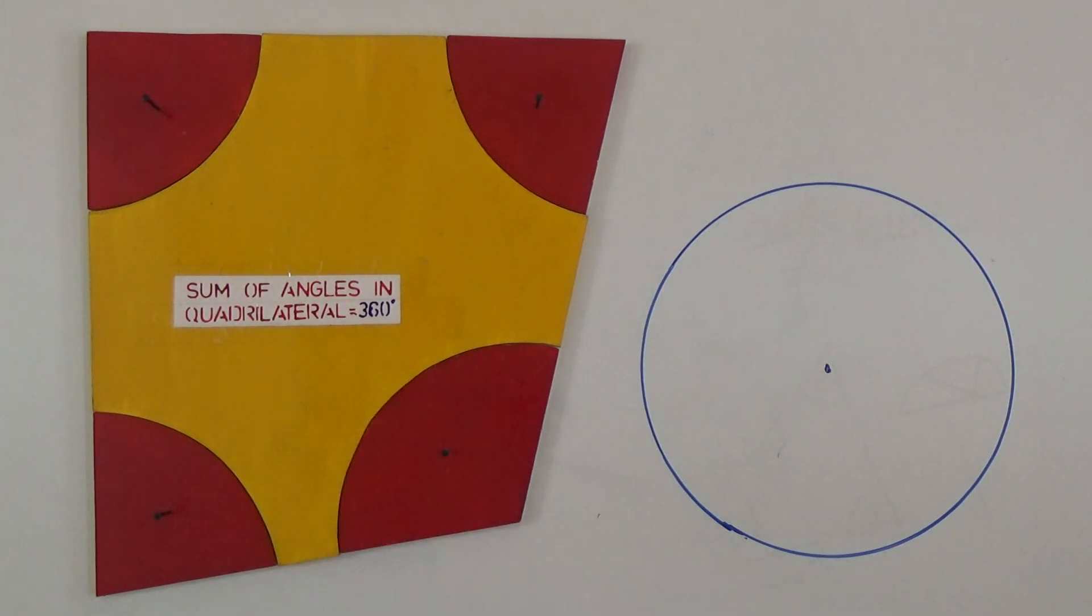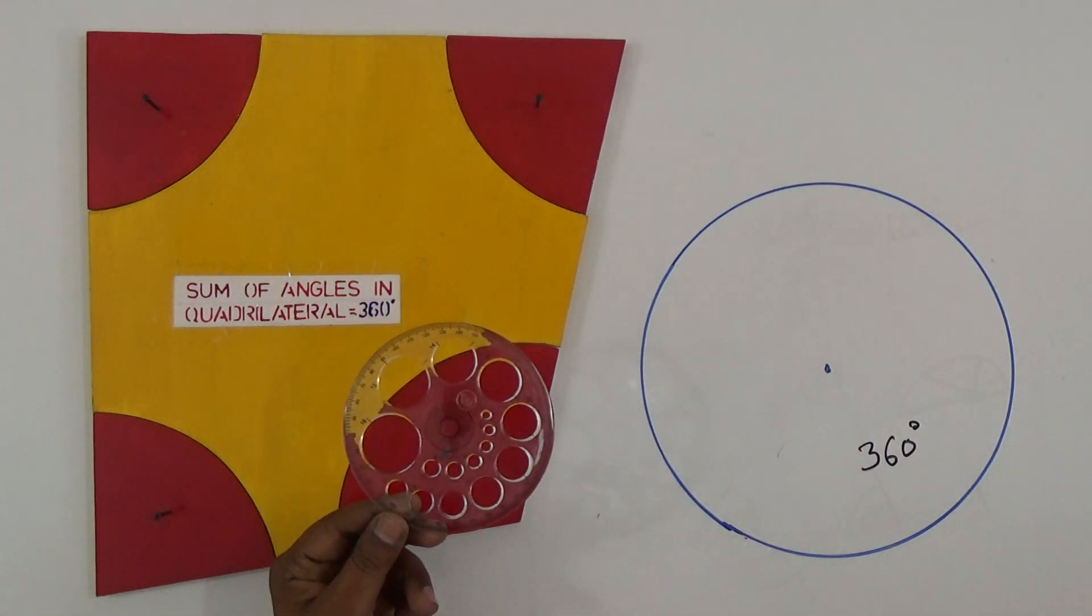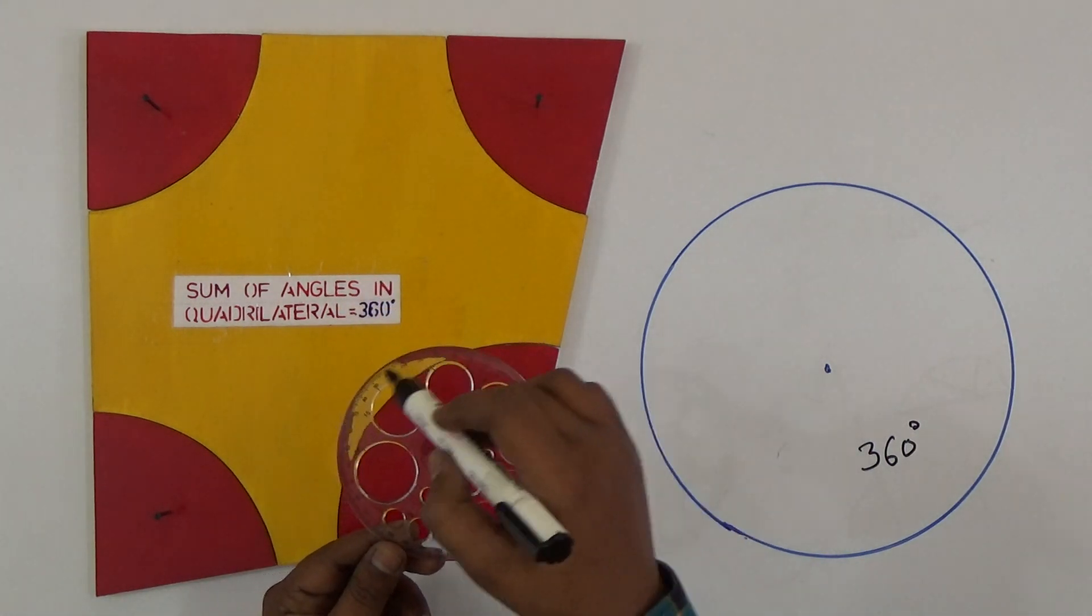Before that you know about the circle right? The total angle of the circle is 360 degrees. You can see here this is a circular shape.